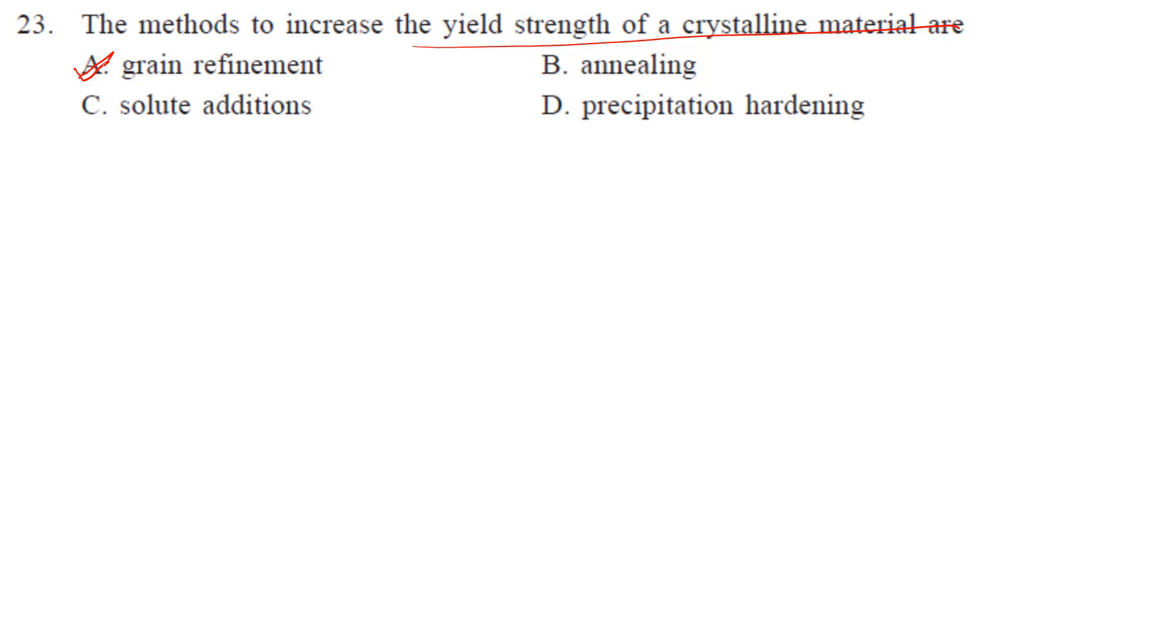Annealing? No, by annealing we actually decrease the yield strength of material. Solute addition? Yes, we do solute additions and strengthening occurs. Precipitate hardening? Yes, we do this like aluminum-copper alloy, nickel alloy, and maraging steel. This is a multiple select question.